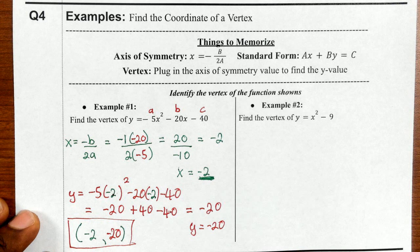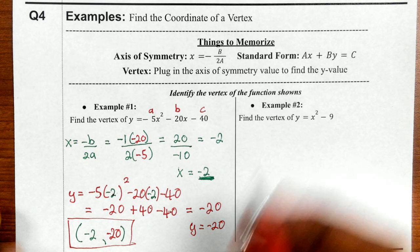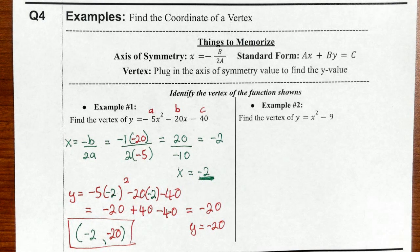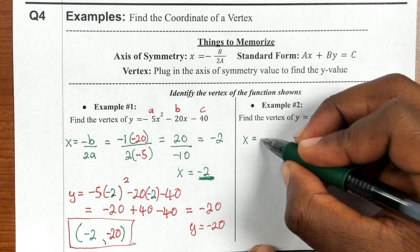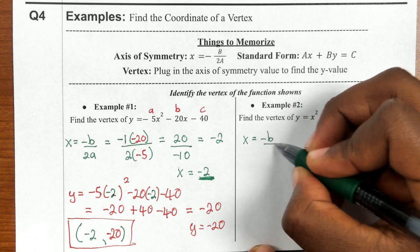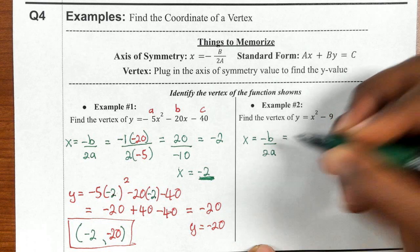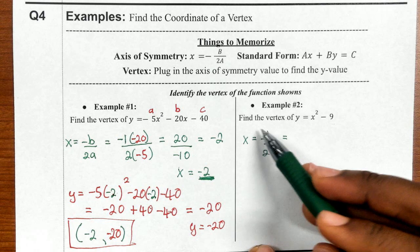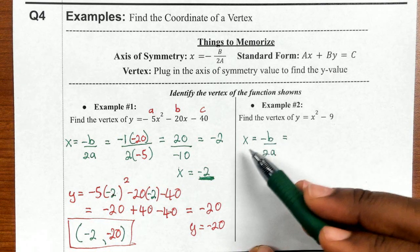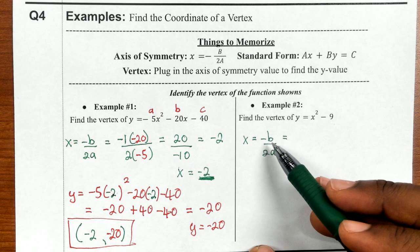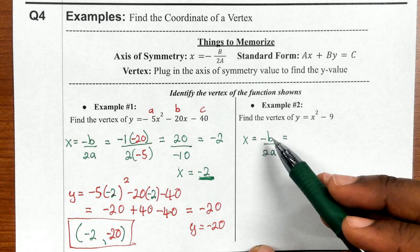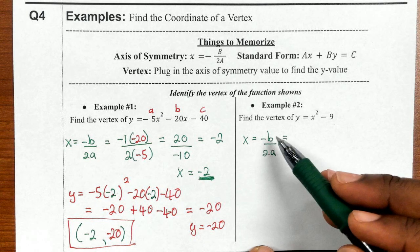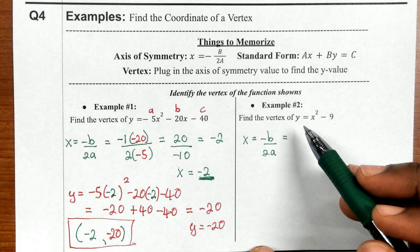So y is negative 20 — put it in the coordinate, and the vertex is (-2, -20). Make sure you include the parentheses. Now for the next one, we use the same formula x equals negative b over 2a. This formula is actually the axis of symmetry formula, but plugging back in is how we find the vertex.